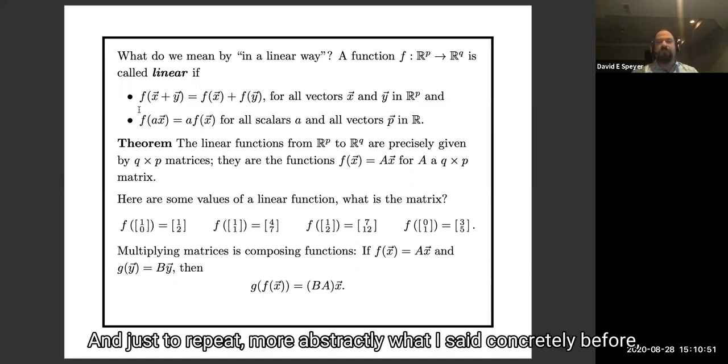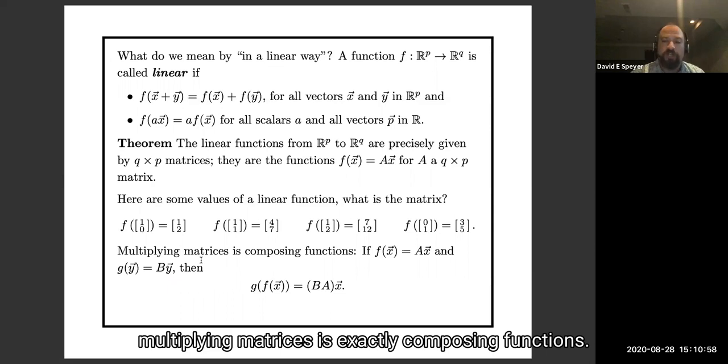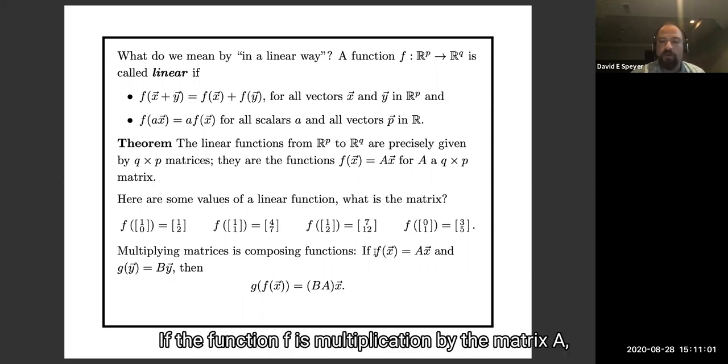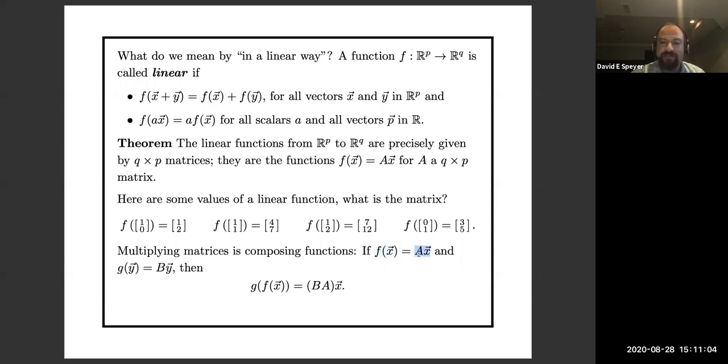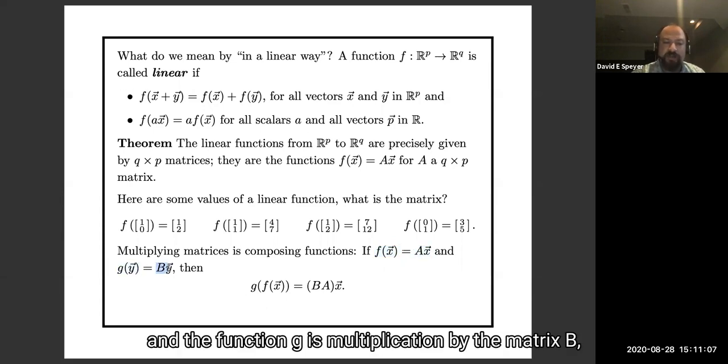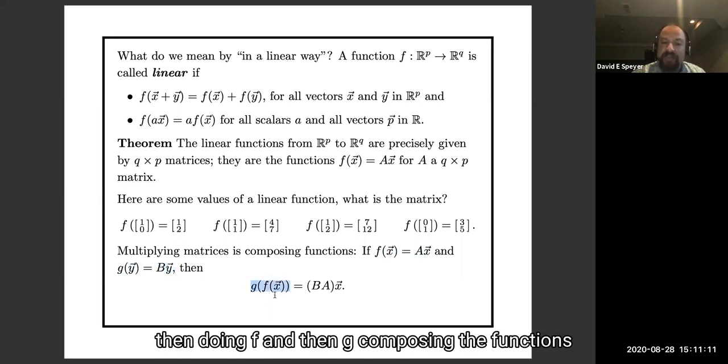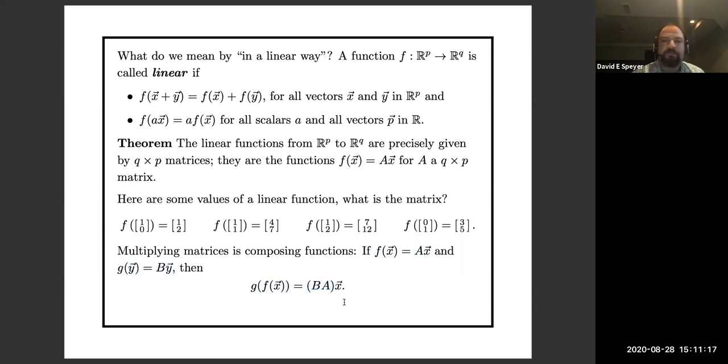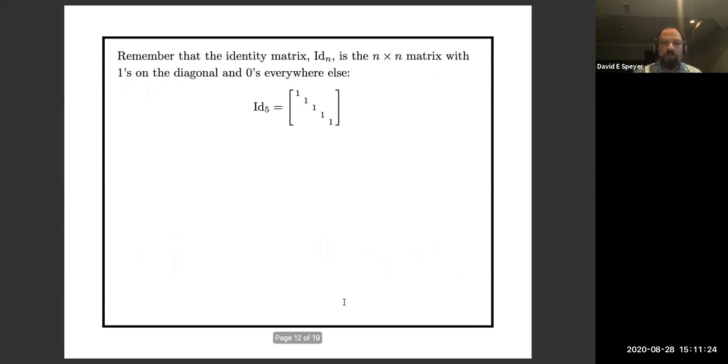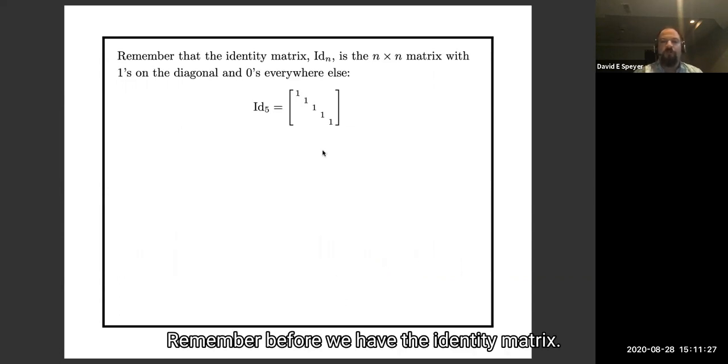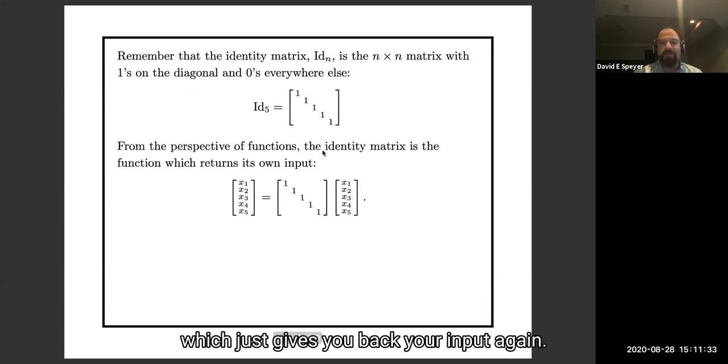Okay. And just to repeat more abstractly what I said concretely before, multiplying matrices is exactly composing functions. If the function f is multiplication by the matrix A, and the function g is multiplication by the matrix B, then doing f and then g, composing the functions, is the same as multiplying by BA. A few, those are the main things I have to say, but here are some small notes. Remember before we had the identity matrix. The identity matrix is the function which just gives you back your input again. It takes the input, does nothing to it, it spits it out exactly unchanged.